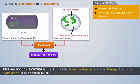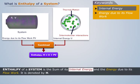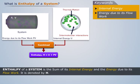Thus enthalpy of a system is the sum of its internal energy and the energy due to its flow work. It is denoted by H.